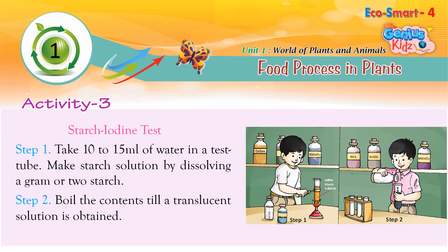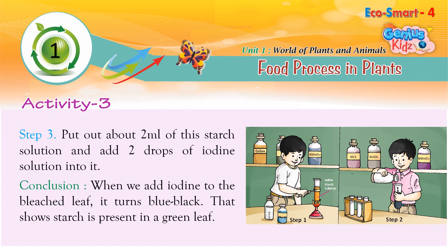Activity 3: Starch iodine test. Step 1: Take 10–15 ml of water in a test tube and make a starch solution by dissolving a gram of starch. Step 2: Boil the contents until a translucent solution is obtained. Step 3: Put about 2 ml of this starch solution and add drops of iodine solution into it. Conclusion: When we add iodine to the bleached leaf, it turns blue-black, confirming that starch is present in a green leaf.